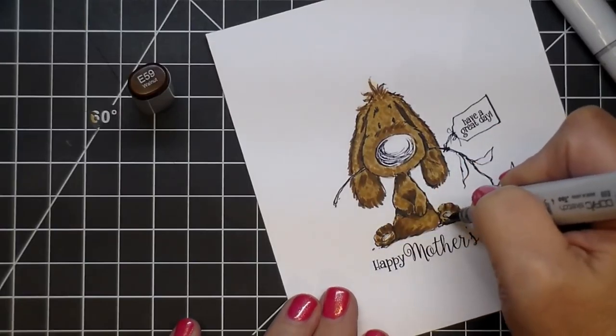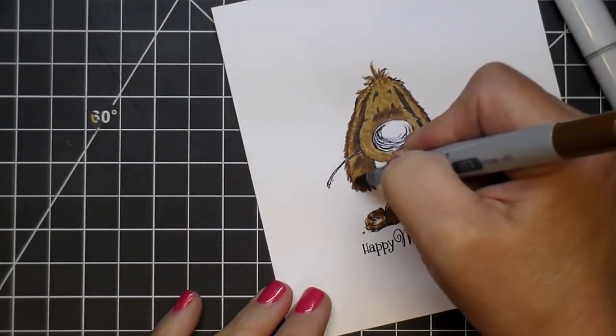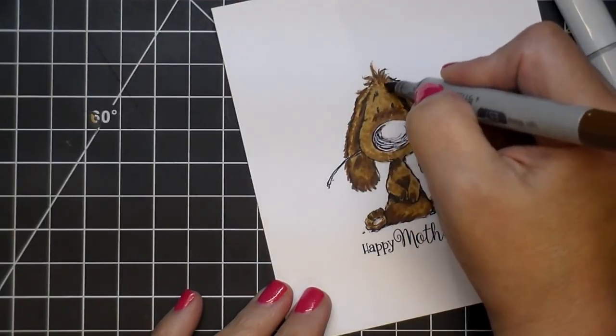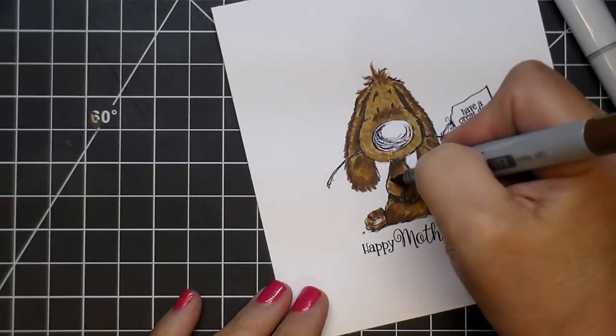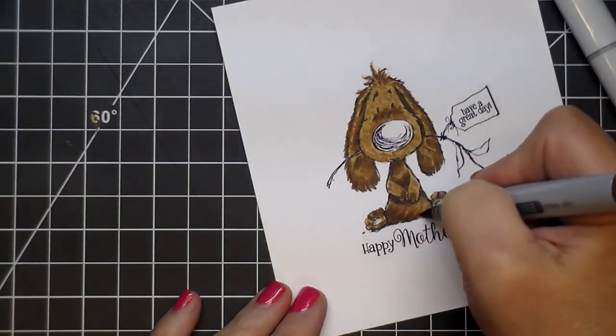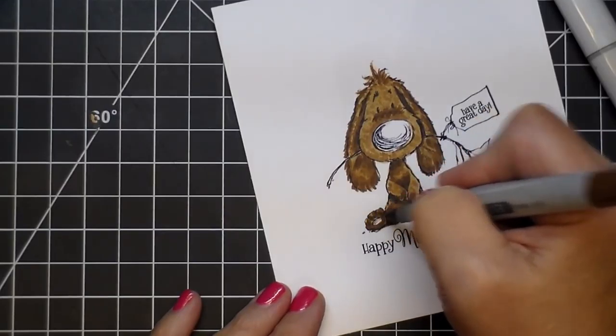And at the end, I also go over it with a pen to kind of put in some of those lines. Because it is such a faint outline, I do lose some of that when I was coloring it. So at the very end, I go back and add back in some of those black lines with a micron pen.